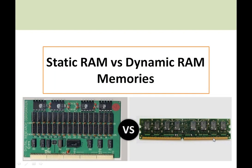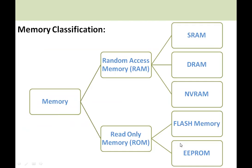Here I am going to discuss static RAM and dynamic RAM memories. Both these memories are volatile memories, meaning whenever power is available to these chips they will retain the data, and whenever power is removed they will lose their data. The memory classification can be broadly done as shown here: random access memory and read-only memory.